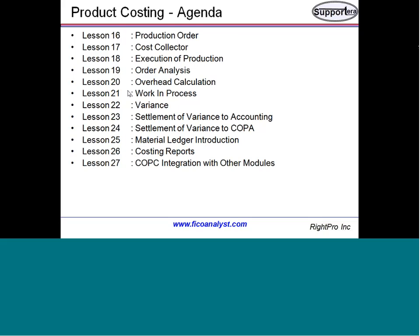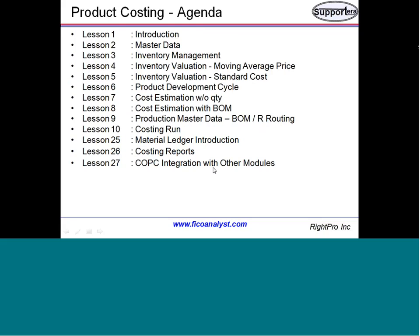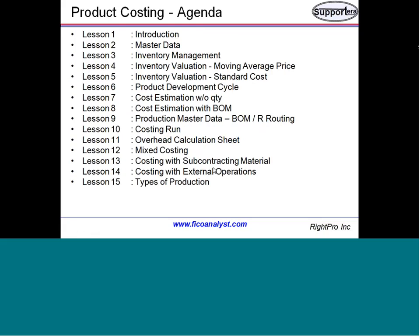There is something called results analysis key, which is calculated for your work in process. For a sales order, you can also do results analysis. This entire course combines two SAP courses: product cost planning — which covers the standard cost estimation portion — and cost object controlling — which covers types of production, production orders, cost collectors, and repetitive manufacturing scenarios.